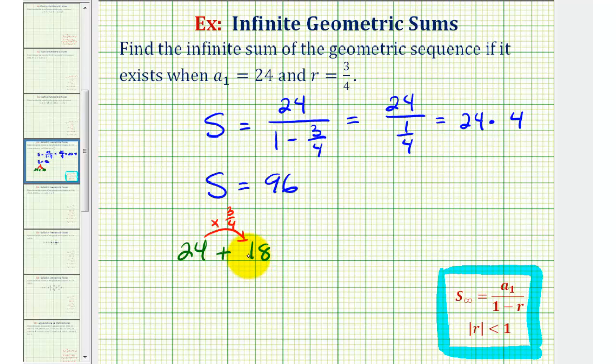So now we'll keep multiplying by three-fourths to find the next several terms. So 18 times three-fourths is equal to 27 halves, which is the same as 13.5.